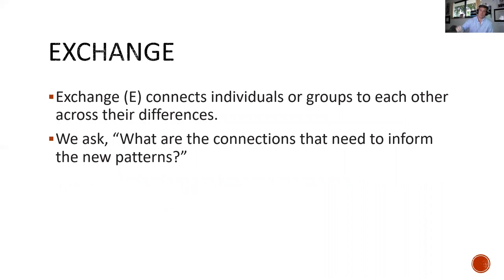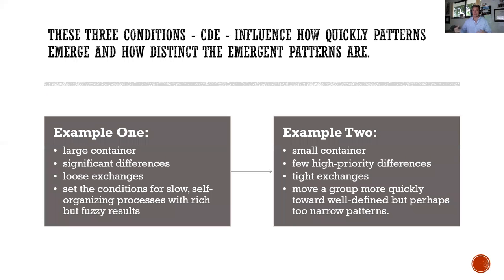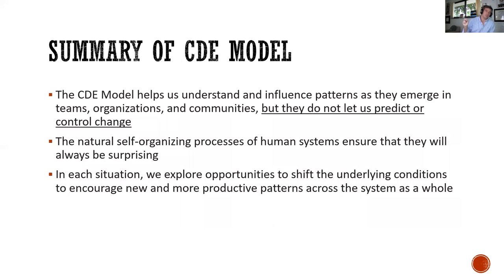It's a very dynamic, question-asking, needs-assessment approach. Exchange connects individuals or groups to each other across their differences — we ask what are the connections that need to inform the new patterns. Two examples: a large container with significant differences and loose exchanges sets conditions for slow self-organizing processes with rich but fuzzy results. A smaller container with few high-priority differences and tight exchanges moves a group more quickly toward well-defined but perhaps too narrow patterns.